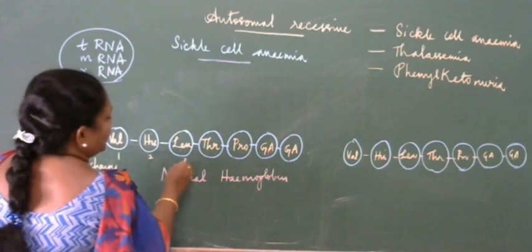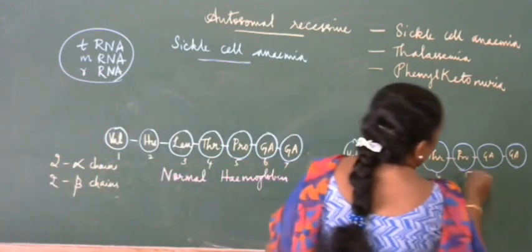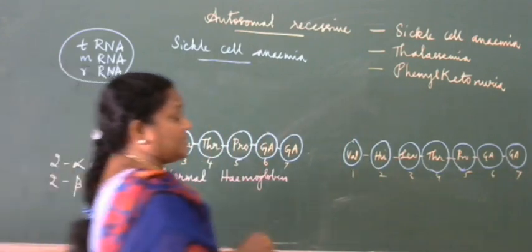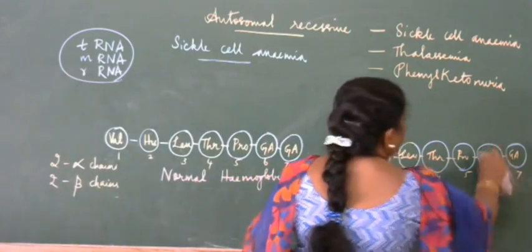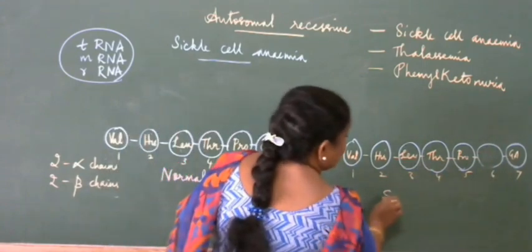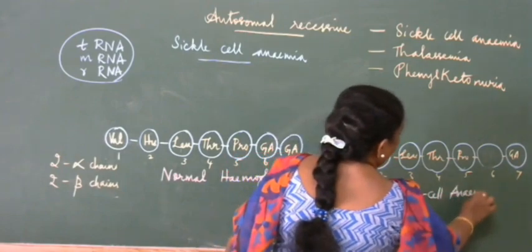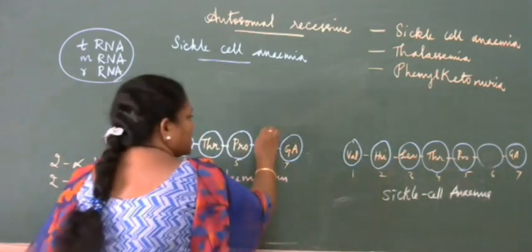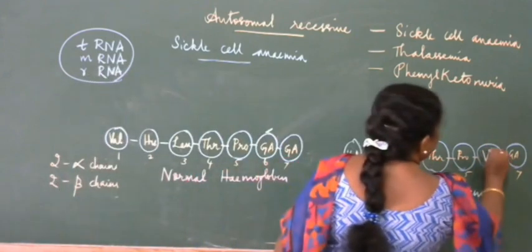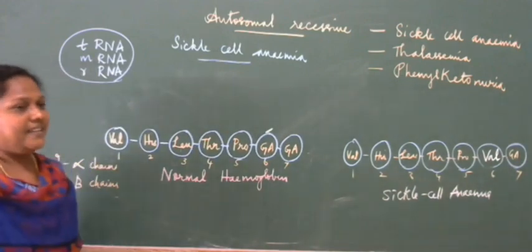There is a change at the sixth position of the beta-globin chain. Counting positions: one, two, three, four, five, six — at the sixth position in the normal hemoglobin it is glutamic acid, but in the sickle cell patient it is valine. You can see the change clearly.